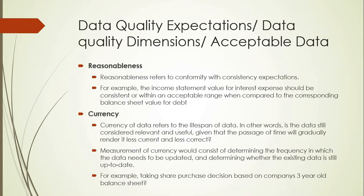Reasonableness is basically conformity with consistency expectations. For example, if an income statement shows interest expense of one million, but the balance sheet shows the company as debt-free with zero debt, this becomes unreasonable data. Reasonableness is closely related to consistency, but here we are checking different dimensions or datasets altogether.